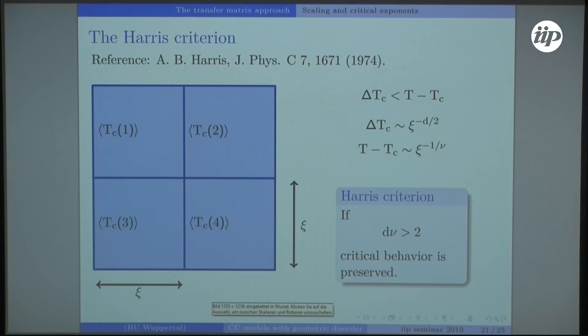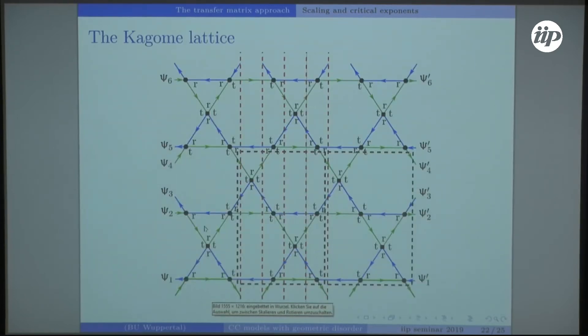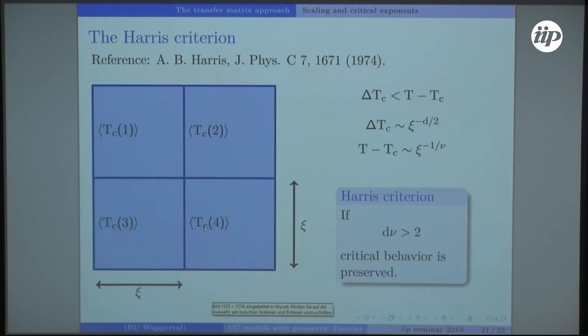Before I'm telling you why I think not all the assumptions for the Harris criterion are fulfilled, let me briefly show you the Kagome lattice. This is the lattice where we also examined Chalker-Coddington type lattice without random geometry.